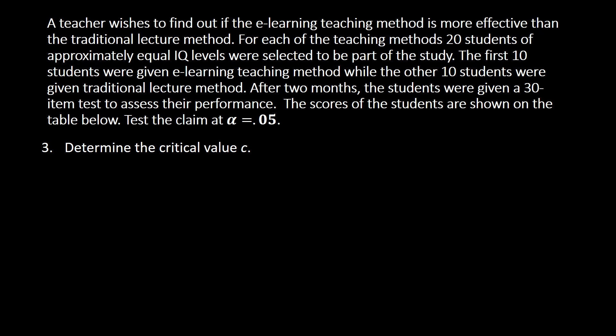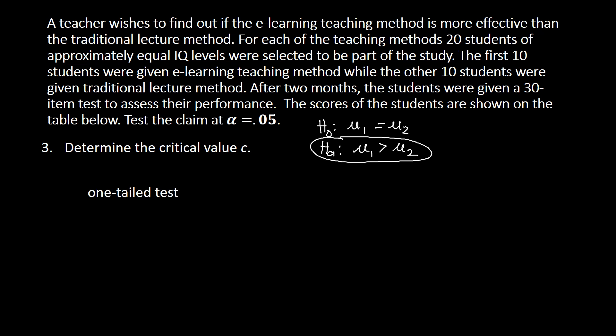Step three is determining the critical value. First we need the type of tail test. From step one, the null is μ₁ = μ₂ and the alternative is μ₁ > μ₂. We always refer to the alternative hypothesis to identify the tail test.